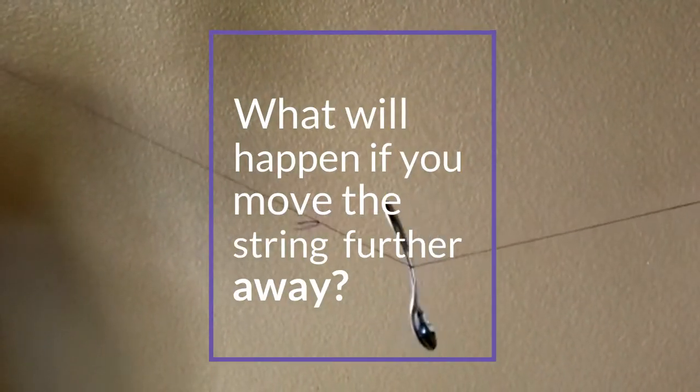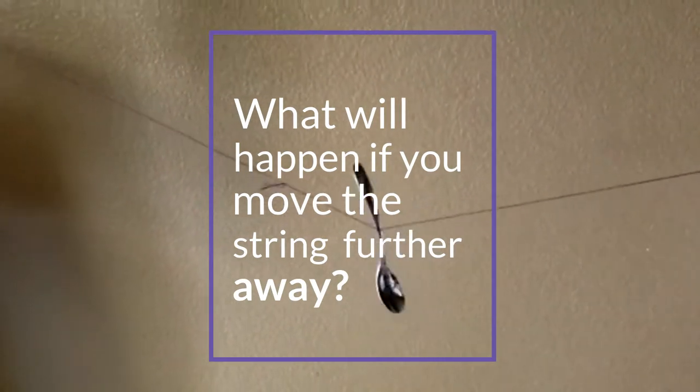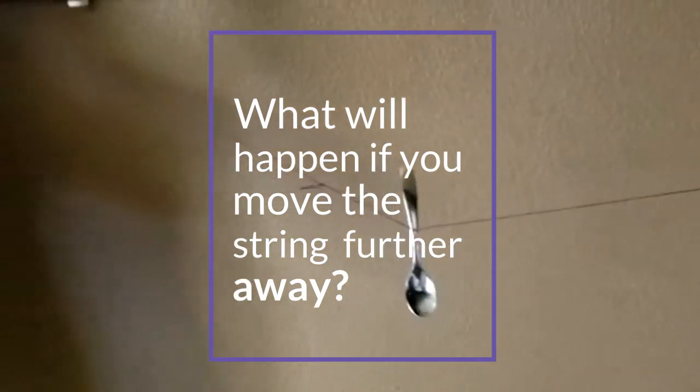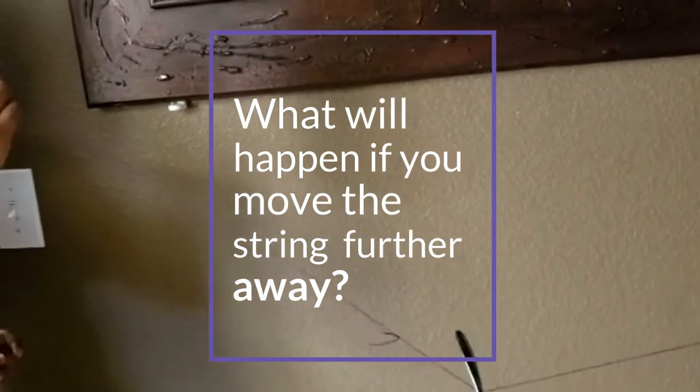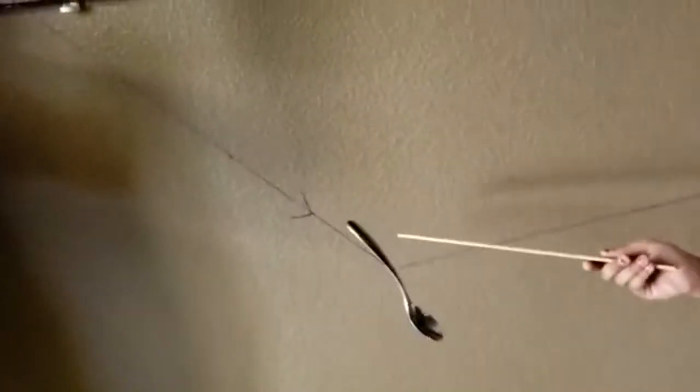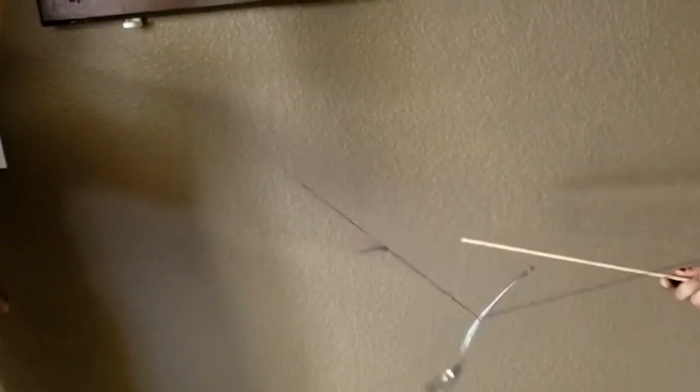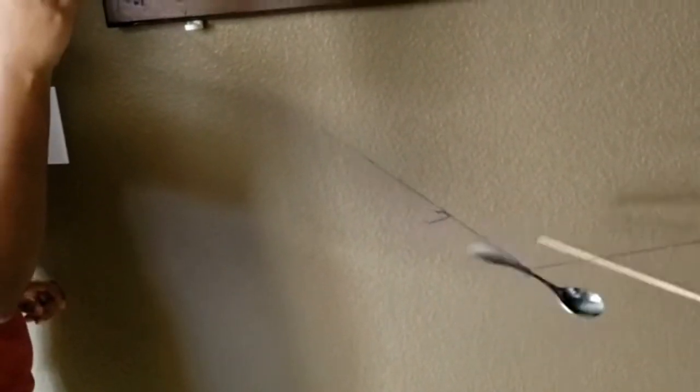Make an observation. Try to see what will happen if you move the string away from your ears and then hit the ruler. Then take the ruler and hit the string. It's not as loud or as clear as it was when it was closer to our ears.